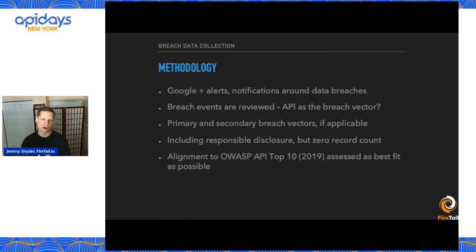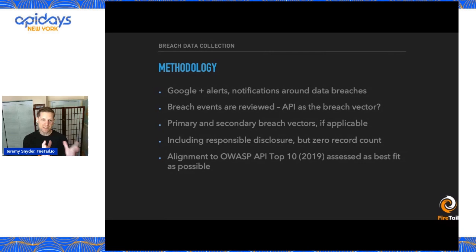We also subscribe to a number of RSS feeds, industry newsletters, et cetera. We have triggers for notifications around data breaches — actually just broader data breaches. And when we see data breaches that come from other factors, we always dive in and try to do analysis. One of the first questions we ask is: was an API either the primary or secondary breach vector, or one of the ways that the attackers got in and got the data?